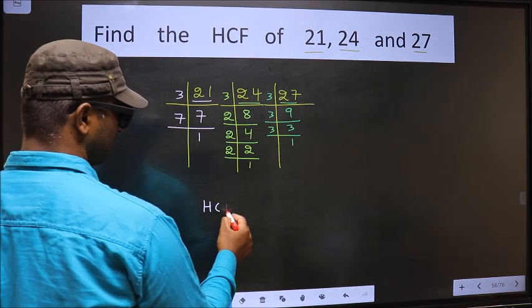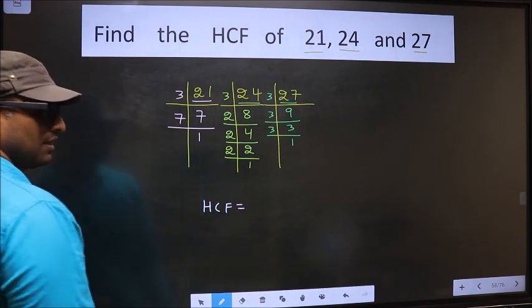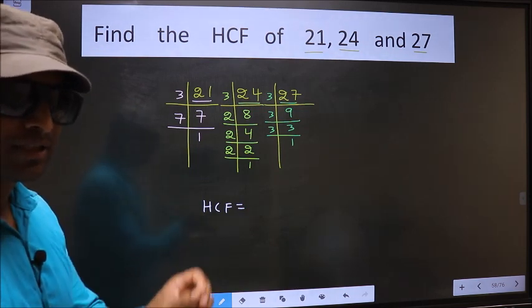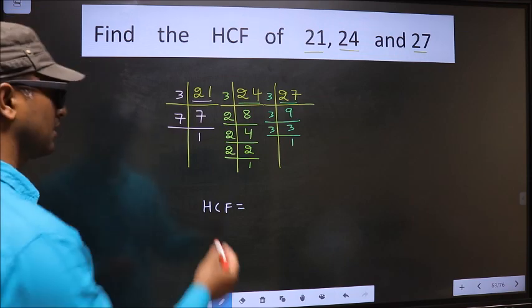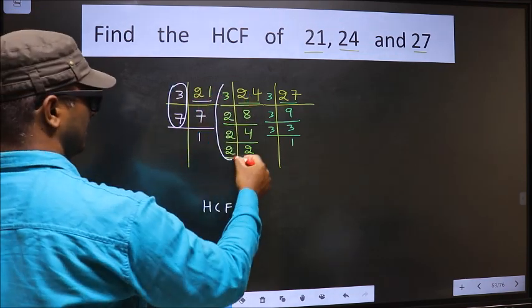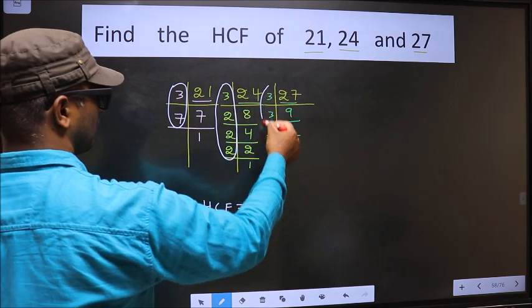Now our HCF is... HCF is the product of numbers which should be present here and here and also here.